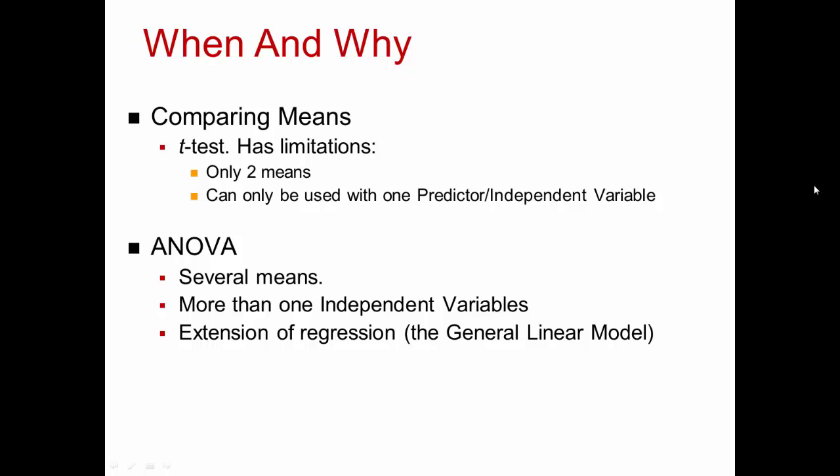When and why might we want to use an Analysis of Variance, or ANOVA? We want to use the ANOVA when we want to compare means. We can use the t-test to compare means, but it has some limitations — you can only compare two means at the same time. Often we'd like to compare means from three or more groups. And with the t-test, it can only be used with one predictor, or one independent variable.